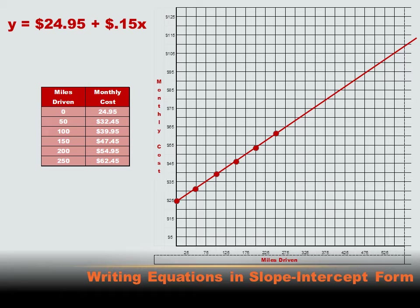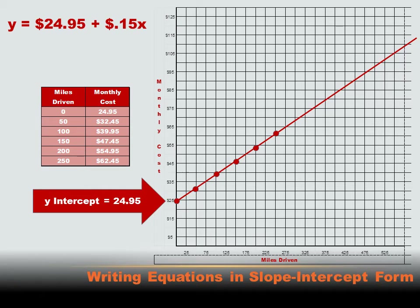That is amazing. But doesn't it mean that if I know what this line is and what this equation is, these numbers have to correlate with the line in some way? I've got a y-axis and x-values, but where do $24.95 and $0.15 come from? Well, $24.95 is where the line crosses the y-axis — where x is zero. That's where we start, and we call that the y-intercept. In this case, it's $24.95.